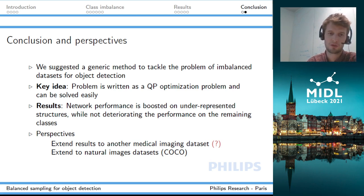To conclude quickly, the key idea is that to tackle this imbalance problem, we write the problem as a convex optimization program, so we're able to solve this very efficiently and quickly. The results we get when we use this sampling strategy is better network performance where the performance is boosted on underrepresented structures but remains high on the other structures, and therefore doesn't deteriorate the overall performance of the network. The natural perspective for this would be to extend those results to natural images datasets like the COCO dataset or other medical imaging datasets. I'm going to stop there, and if you have any questions I'd be happy to answer them, and if you want to reach out to me during the conference or after, feel free to do so. Thank you.